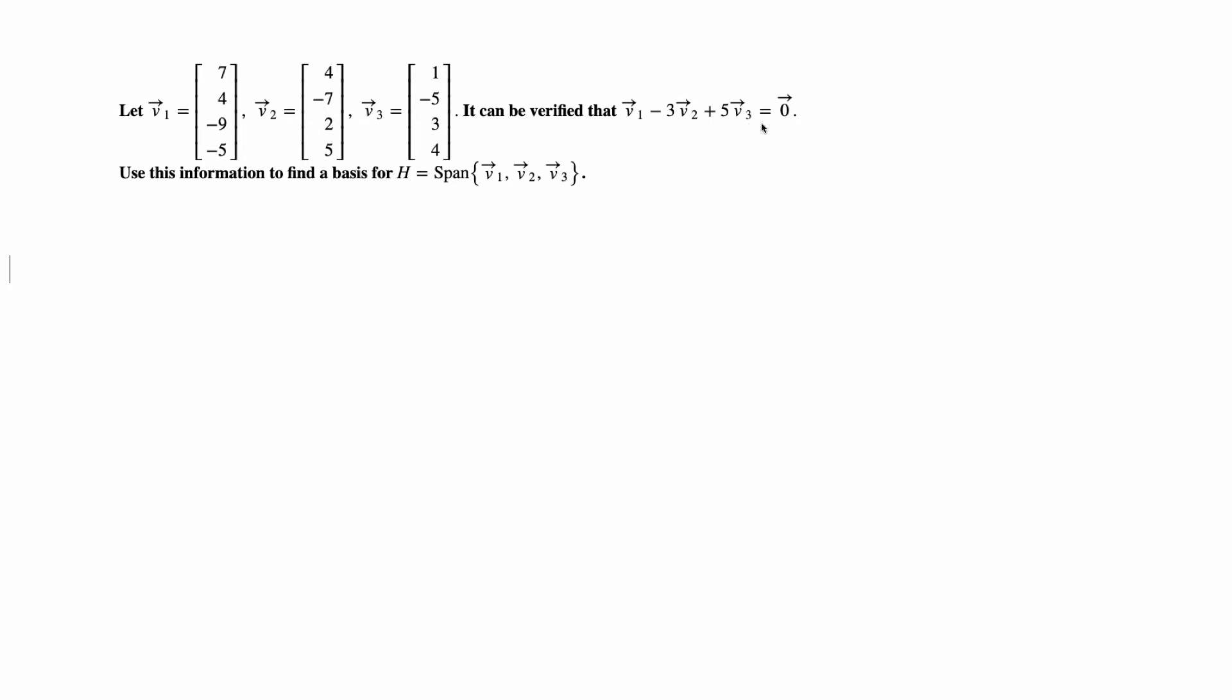This linear combination is zero with coefficients 1, negative 3, and 5 all non-zero. That means these three vectors are linearly dependent because we have a non-trivial linear combination going to zero.